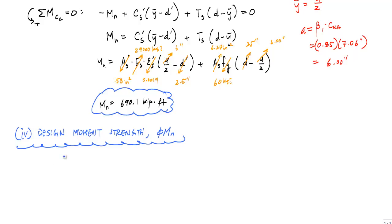In this case, epsilon S equals 0.008. According to the ACI code, if the strain in the steel is greater than or equal to 0.005, then we are allowed to use a strength reduction factor of 0.9.